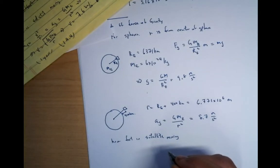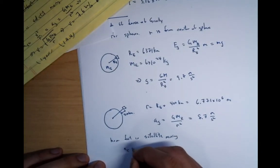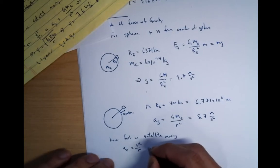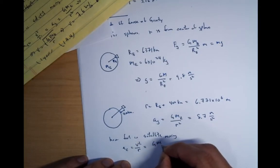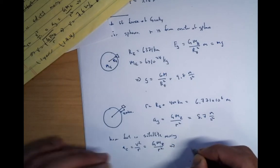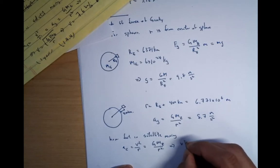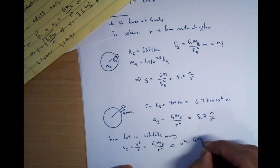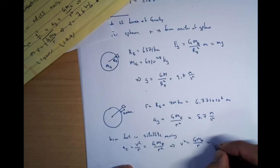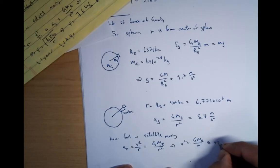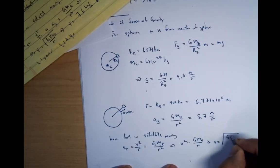So AC is equal to V squared over R. This better be equal to G M E over R squared. So you can figure this out already. It's going to be basically give you that V squared is equal to G M E over R, which is V is equal to the square root of G M E over R.